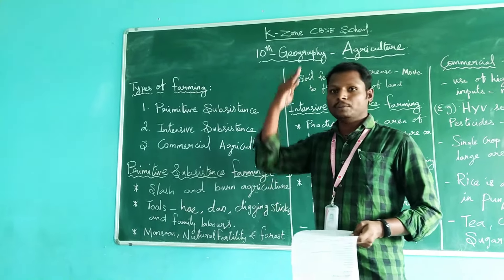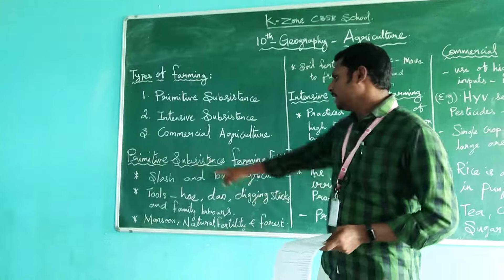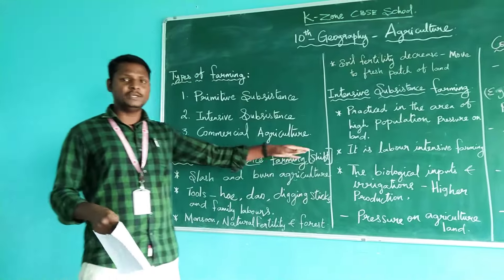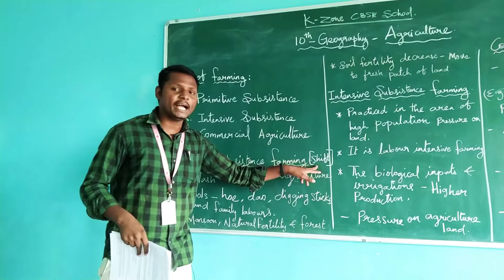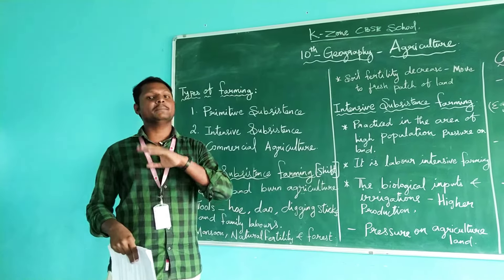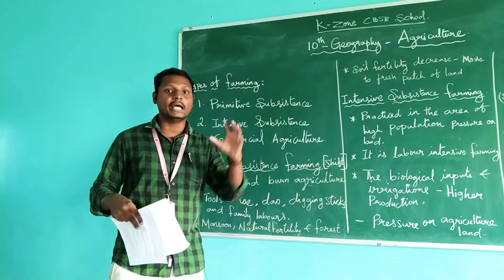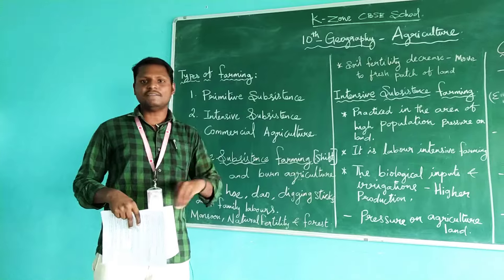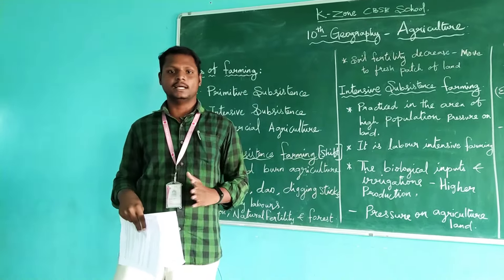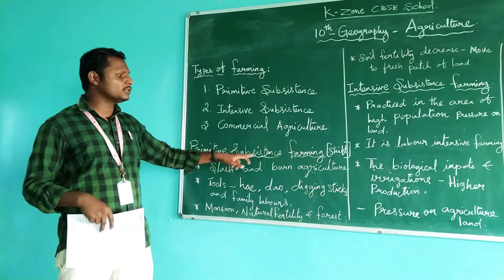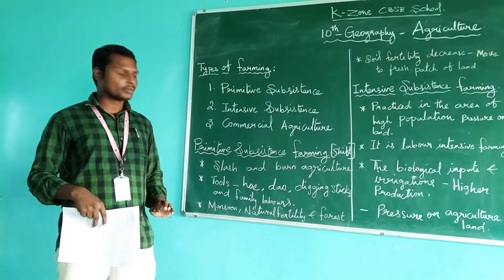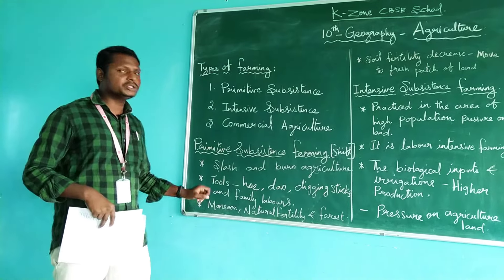These are the three different types of farming methods they have been following from the olden age. The first is primitive subsistence farming. As we know from ninth standard, this is the shifting agriculture, where they cut down trees, burn them, and cultivate on the ashes in the forest. After some time they move to another place and do the same thing. This primitive subsistence method of farming is called slash and burn agriculture.